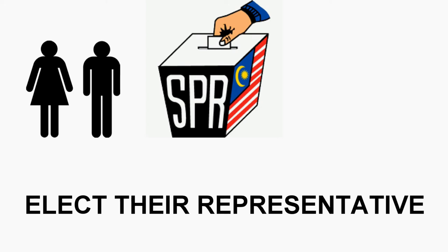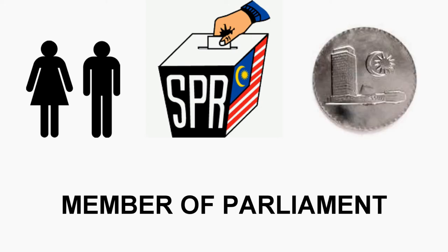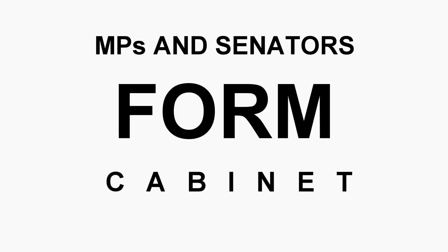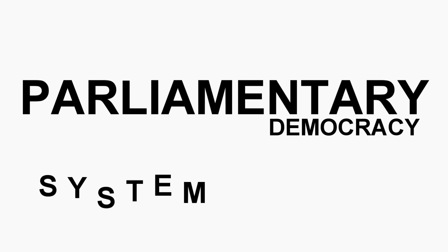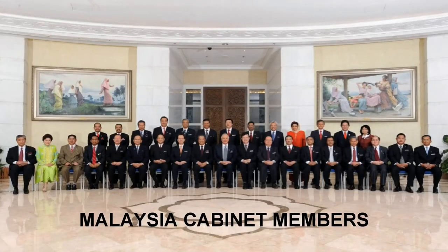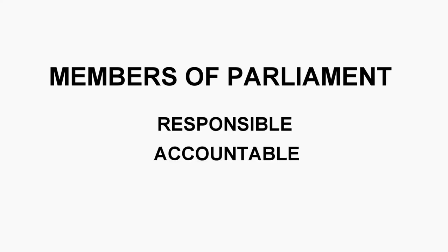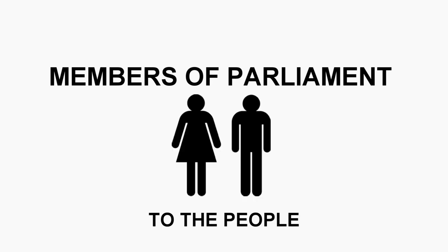These people elect or vote for their representative, and their representative will sit in the parliament and are known as members of parliament. Some of the MPs together with the senators will form a cabinet. Parliamentary democracy means a system where people and voters elect members of parliament, some of whom become cabinet members. The members of parliament are responsible and accountable towards the people, and also towards the cabinet members.